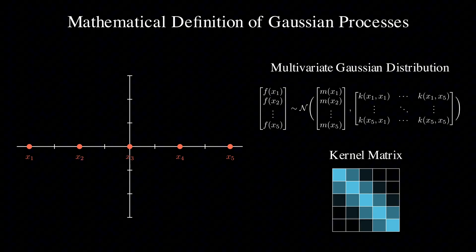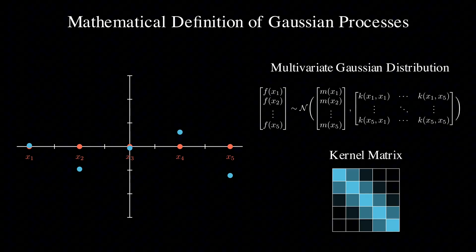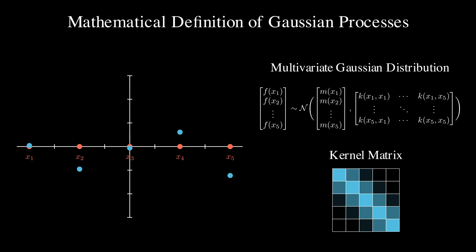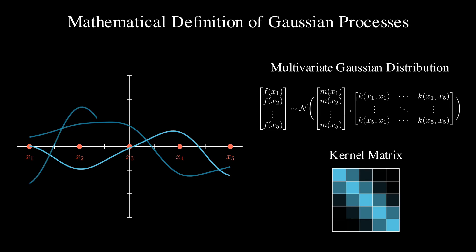Here's what such a matrix might look like. Notice how points closer together have higher covariance, shown by brighter blue colors. When we sample from this multivariate Gaussian distribution, we get a set of function values at our chosen points, and we can connect these points to get a function. And when we use more points and interpolate smoothly, we get a continuous function like this. Every time we sample, we get a different function, but all from the same distribution. This is the magic of Gaussian processes, they give us entire functions as samples.